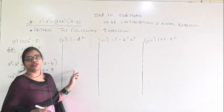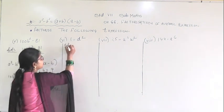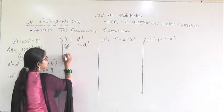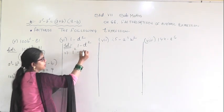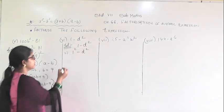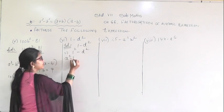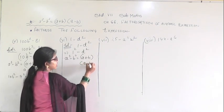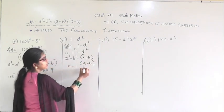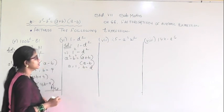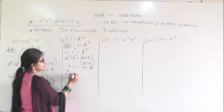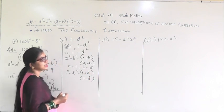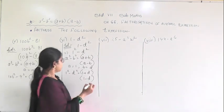In the next question, 1 minus d squared is given. I can write this as 1 squared minus d squared, since 1 squared is 1. Now this is in the form of a squared minus b squared, so a squared minus b squared equals (a plus b)(a minus b), with a equal to 1 and b equal to d. So 1 squared minus d squared equals (1 plus d)(1 minus d).